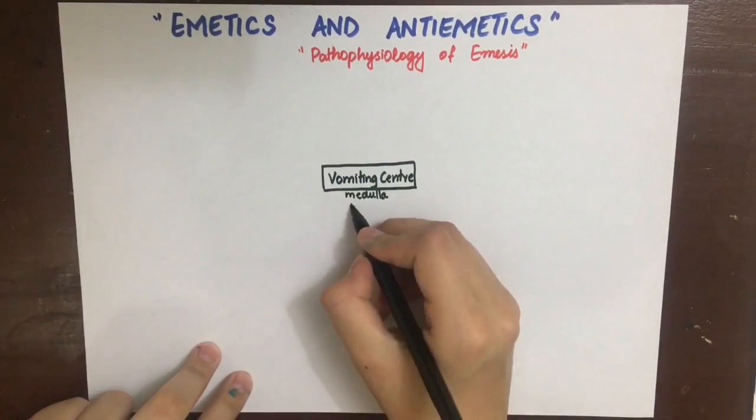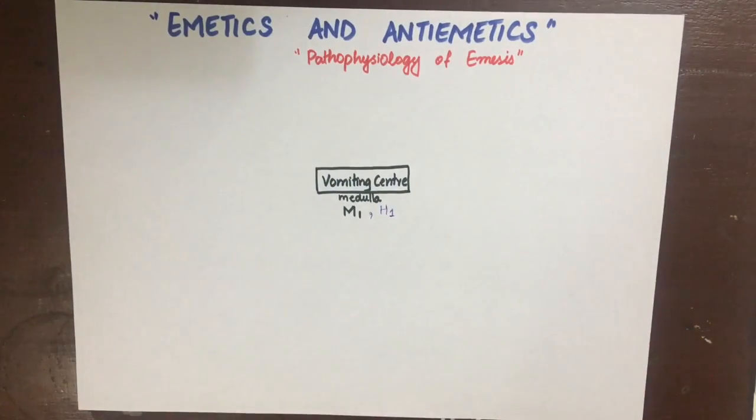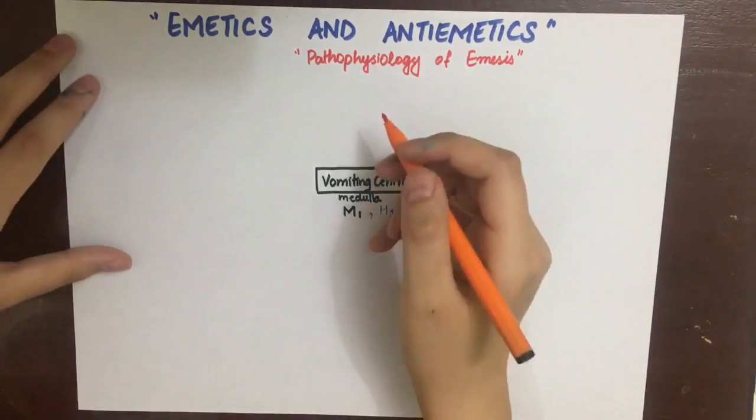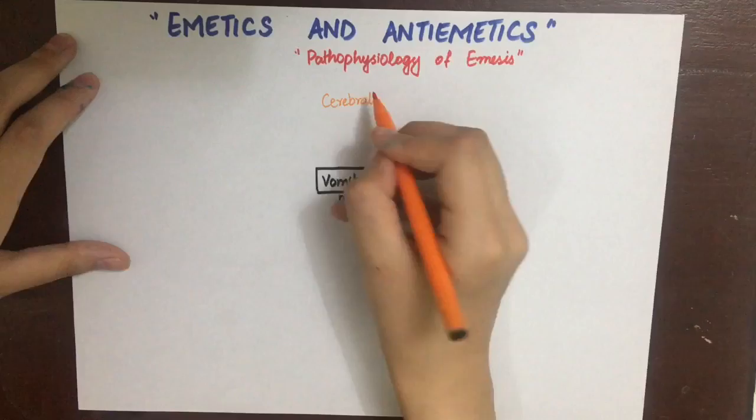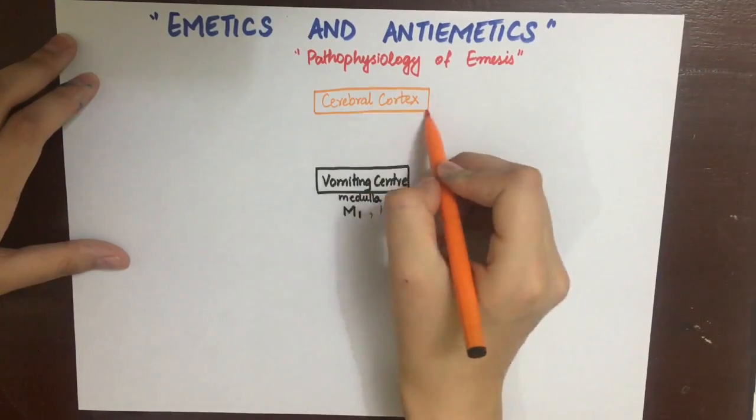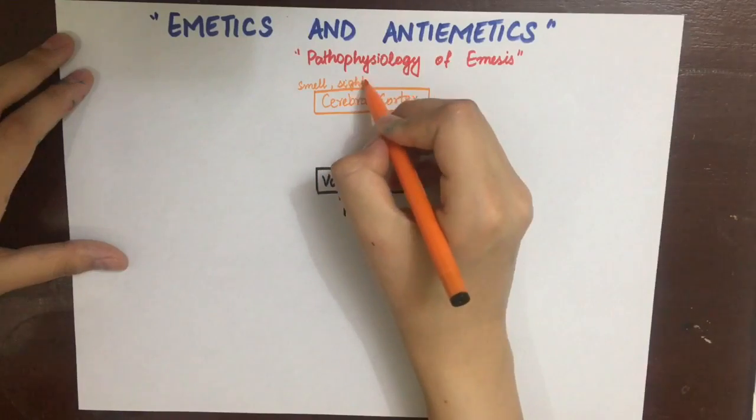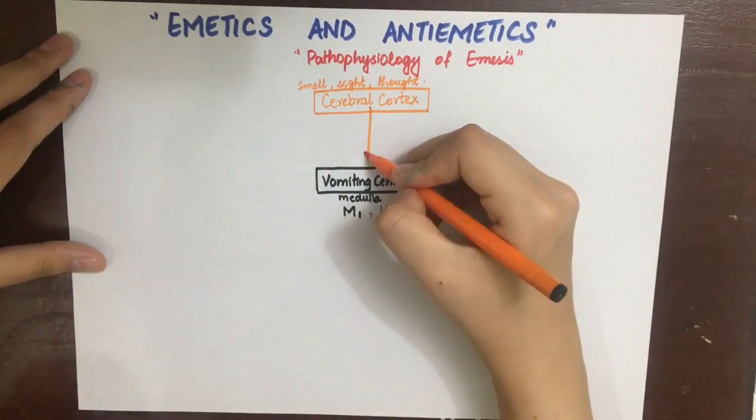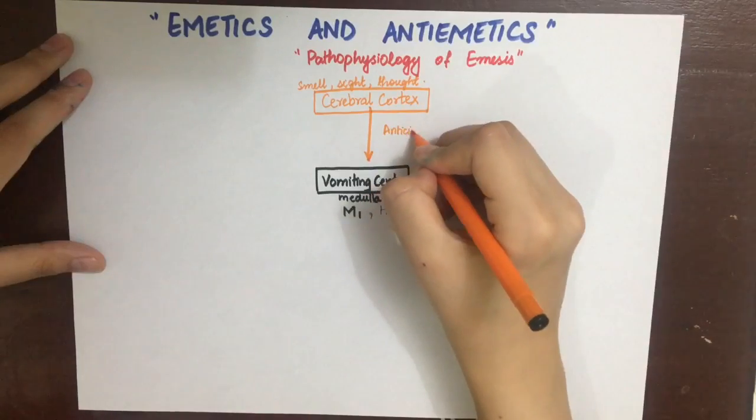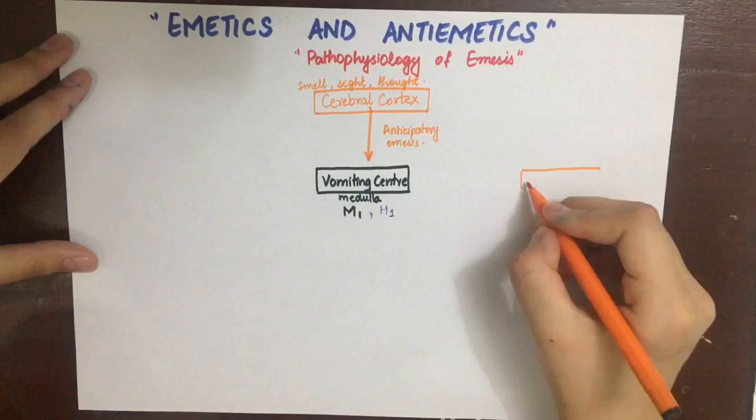The first pathway that can stimulate the vomiting center is the cerebral cortex. Whenever you saw something bad, smelled something bad, or thought of something bad, it caused a nauseous feeling. This is basically known as anticipatory emesis.